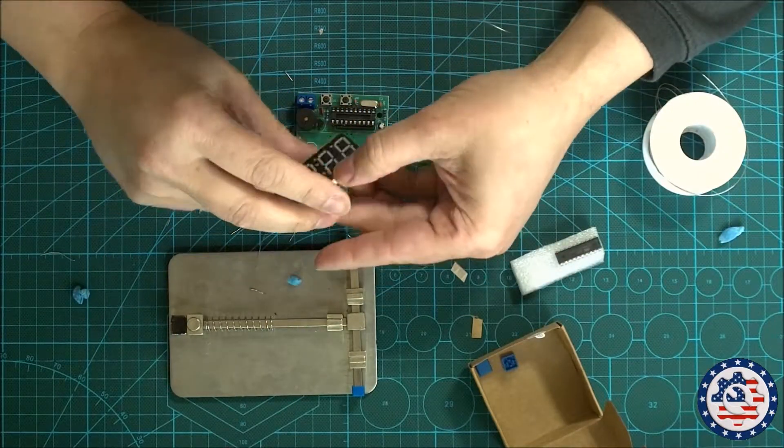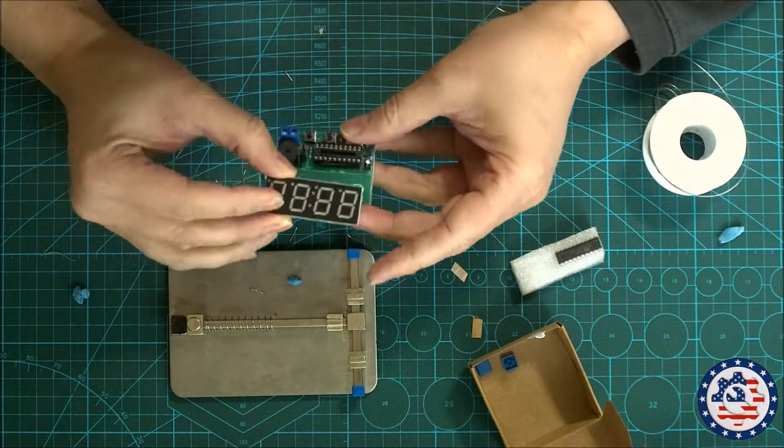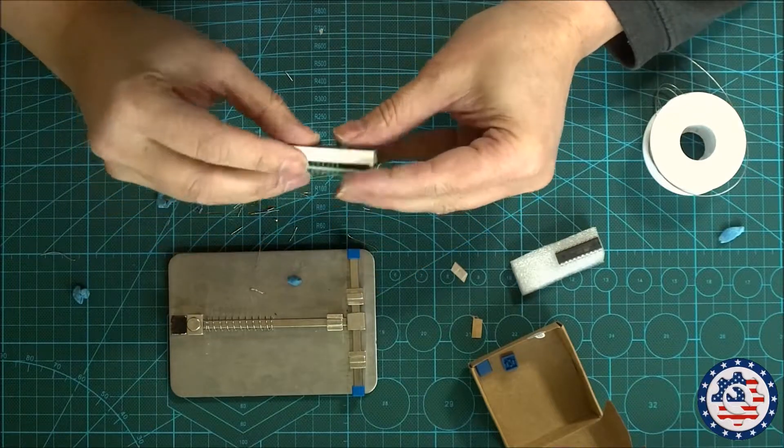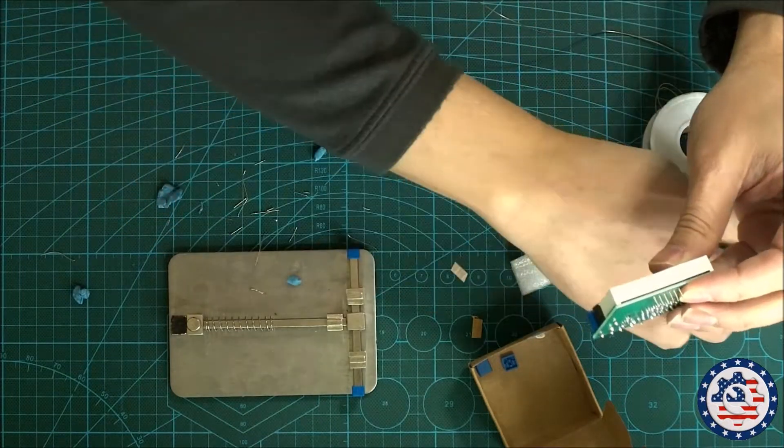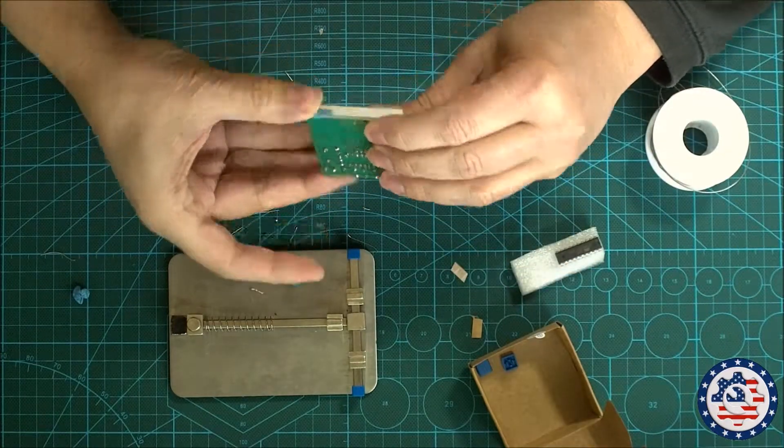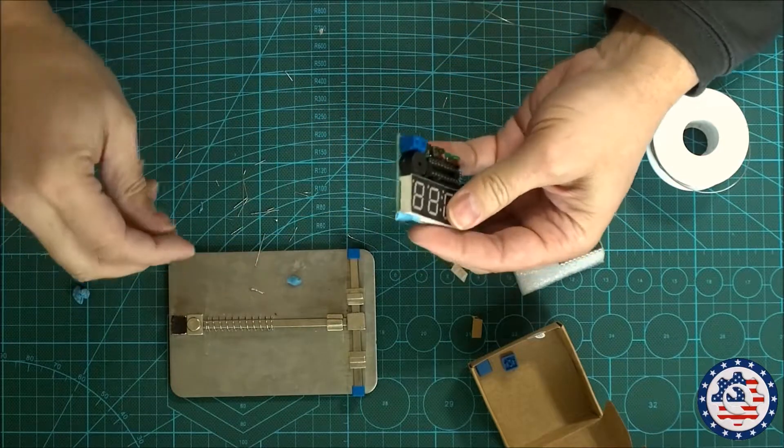So next, I'm gonna install the seven segment display, make sure that lines up correctly, the dots at the bottom, the decimals on the bottom, basically. Line up with the PCB, again use some tack, hold it in place, and then solder all the pins for that.